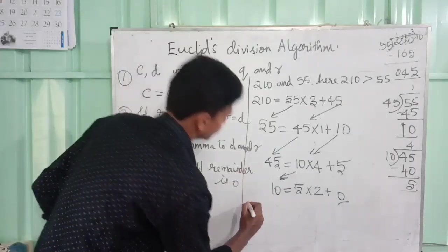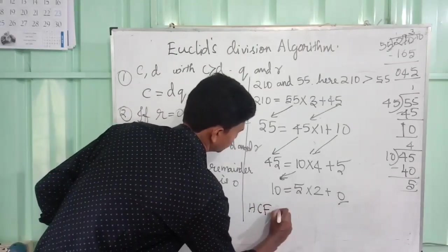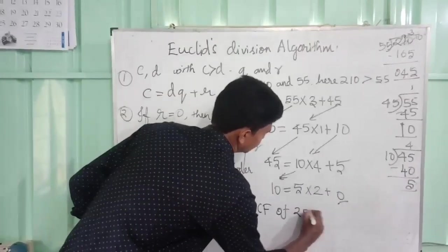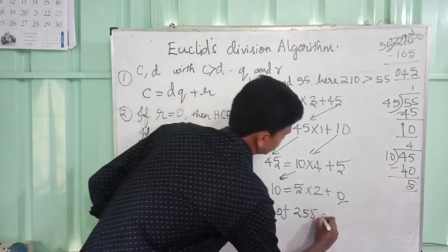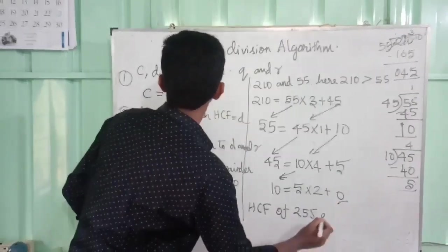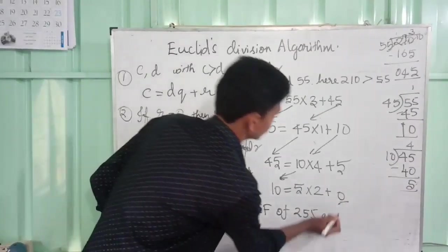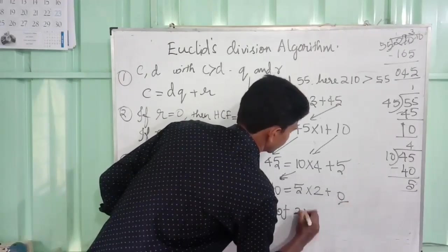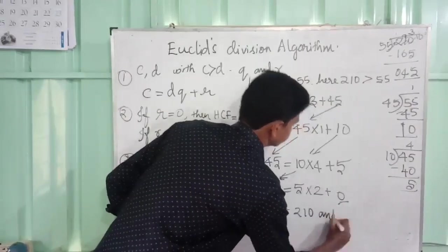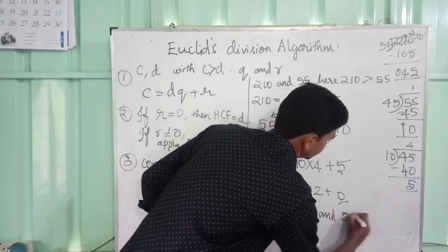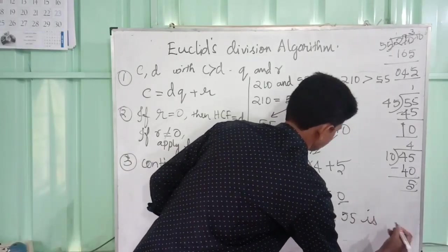So we can write the HCF of 210 and 55 is 5.